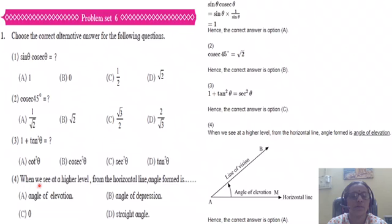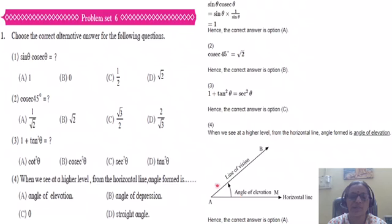When we look at a higher level from the horizontal line, the angle formed is observed from the horizontal level — you are observing at a higher level. So the angle formed is the angle of elevation. This is the angle of elevation. Correct option is A.